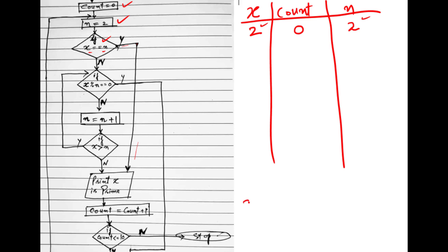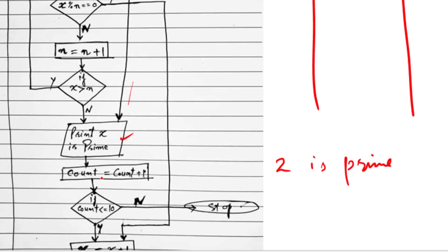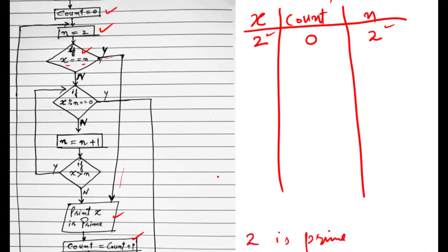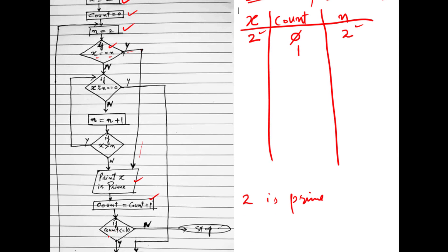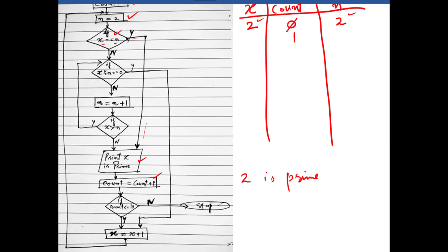Since x equals n, I print '2 is prime.' After printing, I increment the count variable by 1 — count becomes 1. Then I check if count is less than or equal to 10. Since it is, I increment x by 1, so x becomes 3.